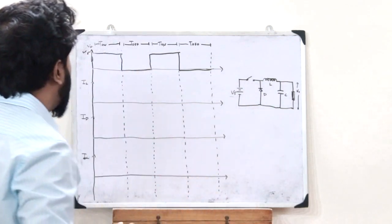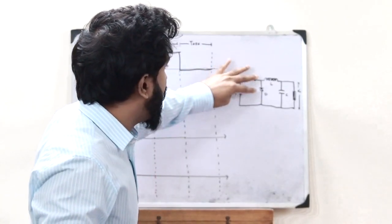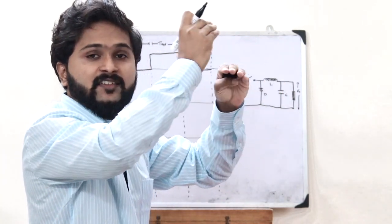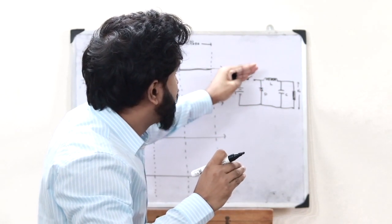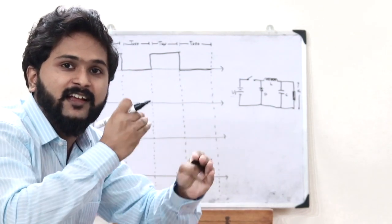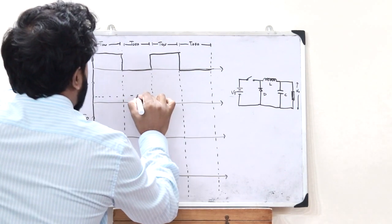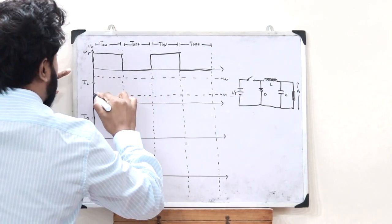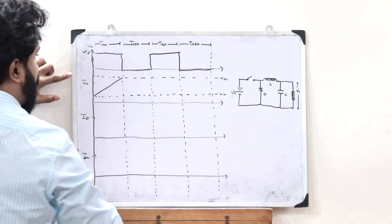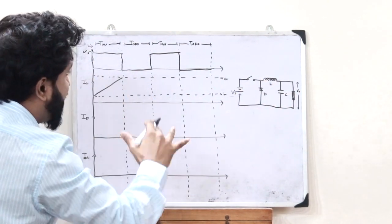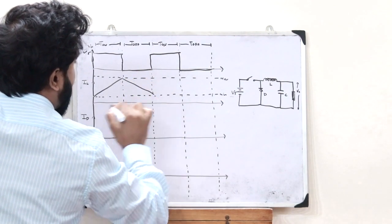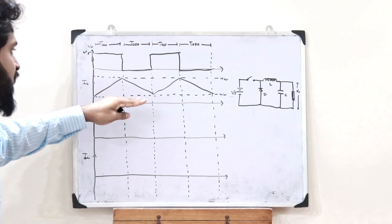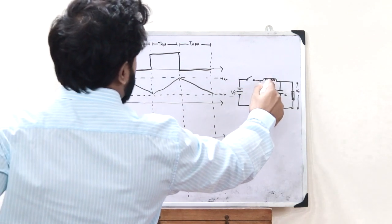Next, let us see the inductor current waveform. When the switch is first turned on, the inductor current starts increasing from a minimum value up to a maximum value. When the switch is turned off, the inductor starts discharging and the current decreases from the maximum value back to the minimum value. This cycle repeats: increasing to maximum when ON, decreasing to minimum when OFF. This is the waveform of the inductor current IL.